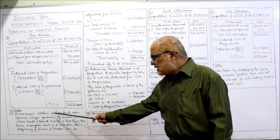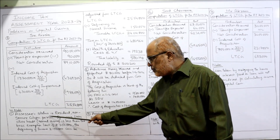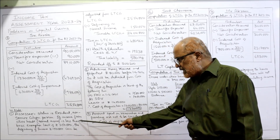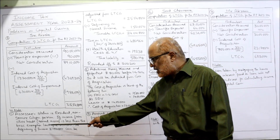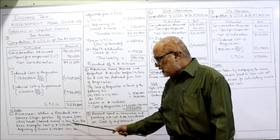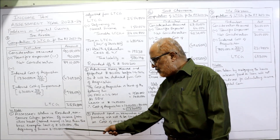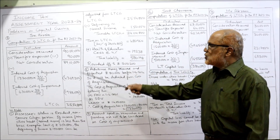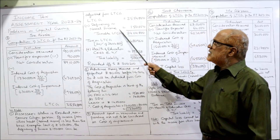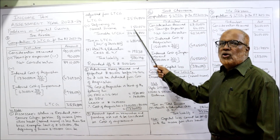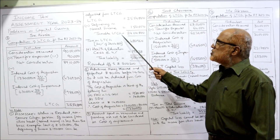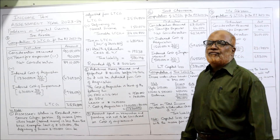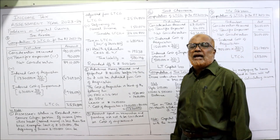The SSC status is resident non-senior citizen person. If income from other heads — normal income — is less than the basic exemption limit of Rs. 2,50,000, the deficiency of Rs. 1,50,000 can be adjusted. So taxable LTCG = Rs. 25,54,800 minus deficiency in normal income of Rs. 1,50,000 = Rs. 24,04,800. This is called the taxable LTCG.